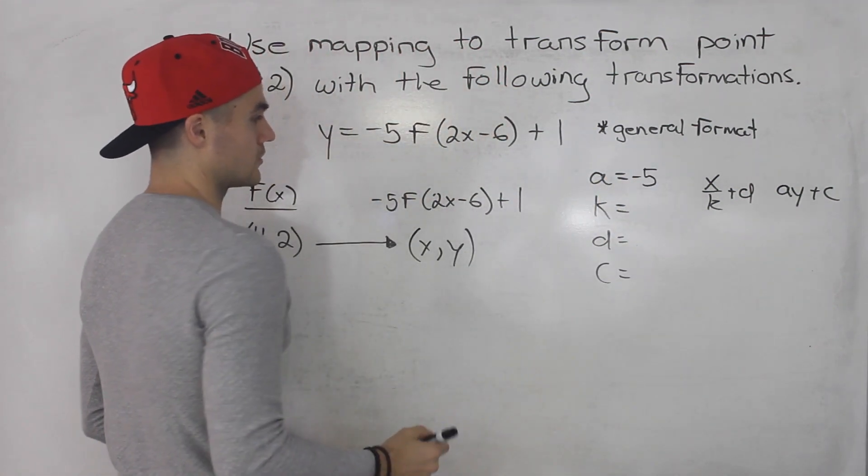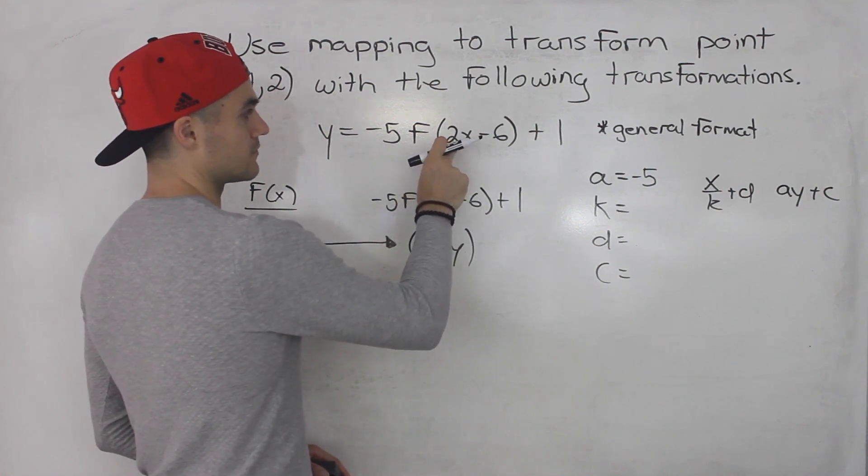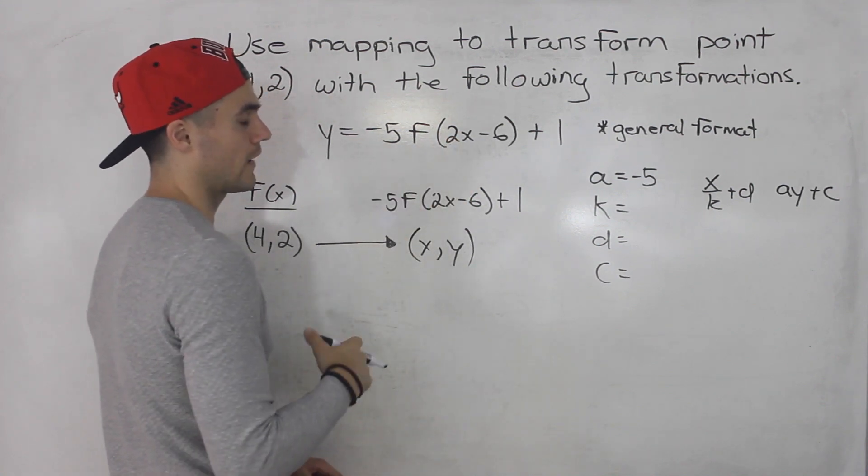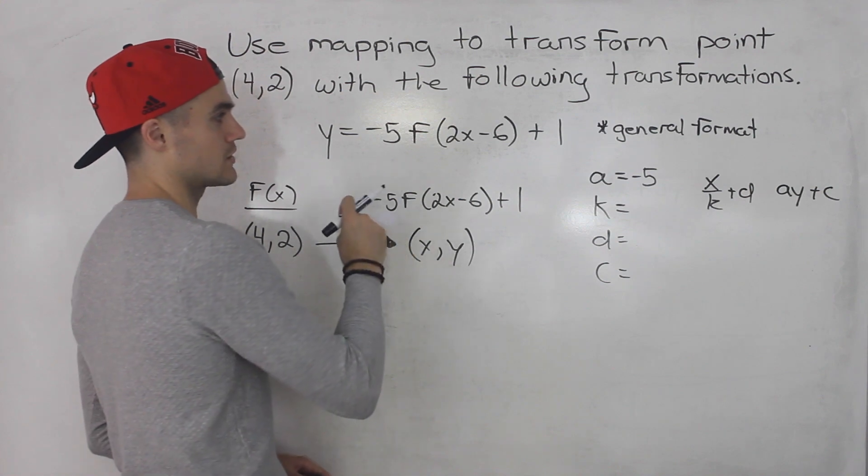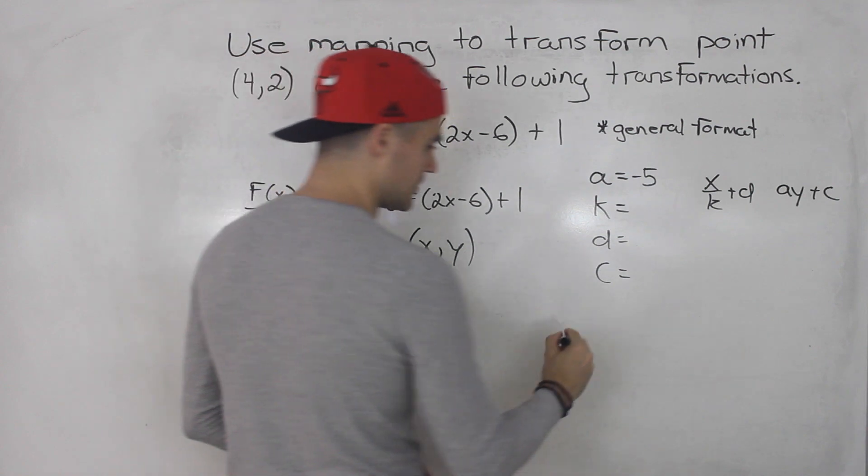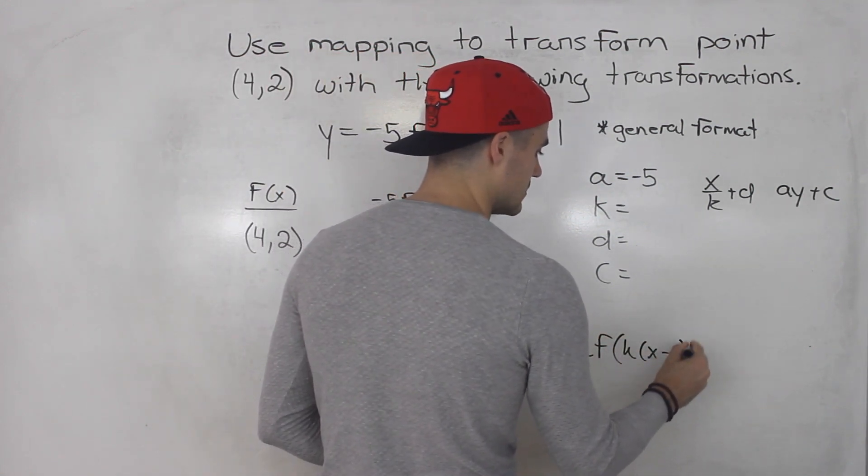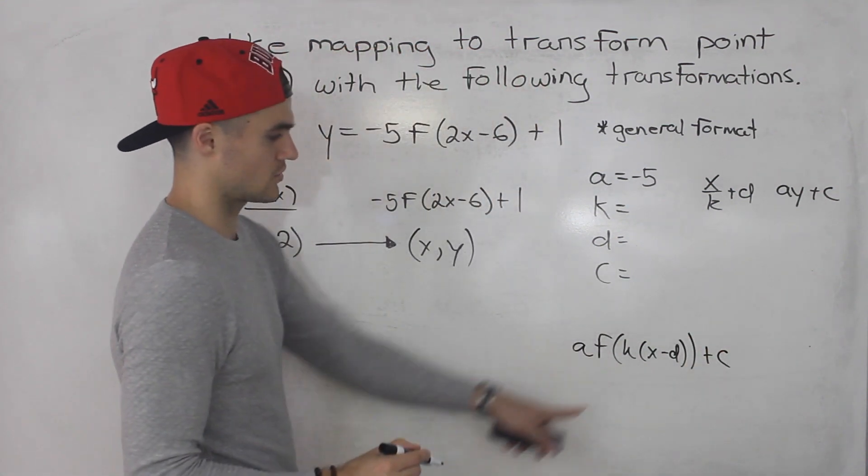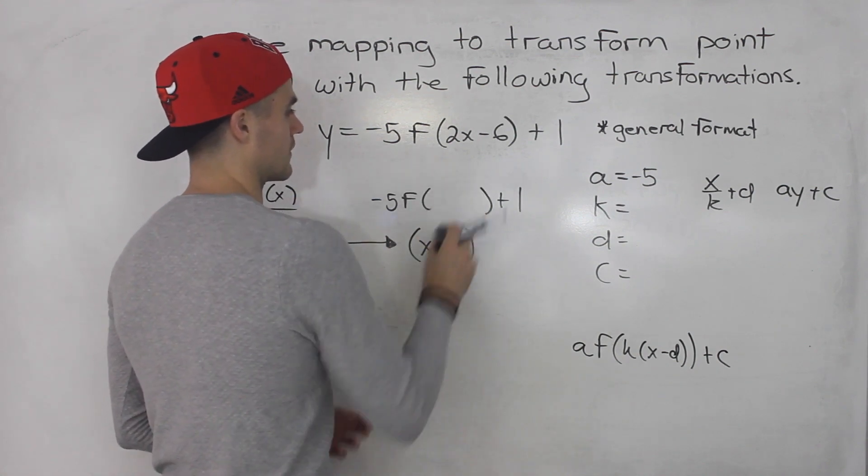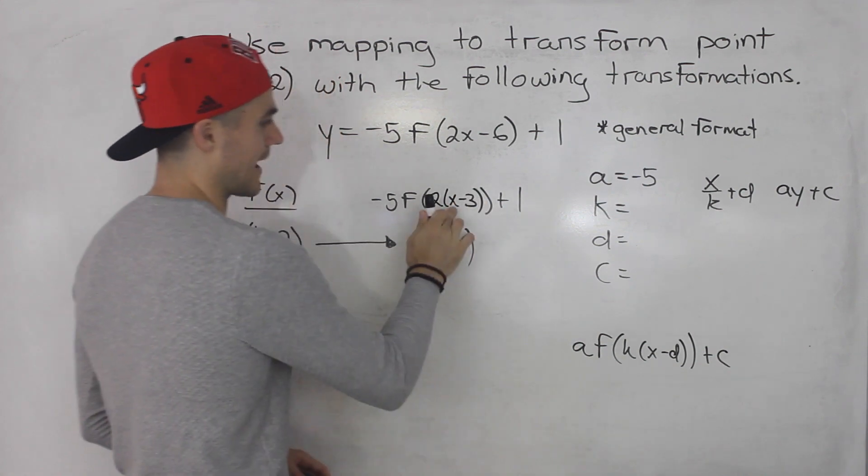What about the k and d values? Those are usually related. Well, notice that this here, 2x minus 6, there's a 2 attached to the x. When you have a function in general format, remember the x has to be by itself. It has to be in the format a f of k bracket x minus d plus c, so that k has to be factored out. We would actually rewrite this function here as 2 bracket x minus 3. That x has to be by itself, and now notice it's in this format.